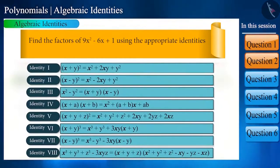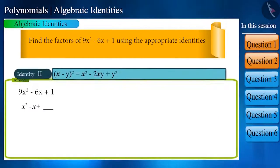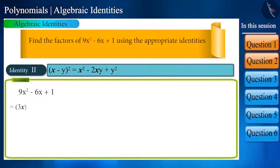Doesn't this look like identity 2? If we write it like this, (3x)² minus 2 multiplied by 3x plus 1 square, then this becomes equal to (3x - 1) to the power of 2.